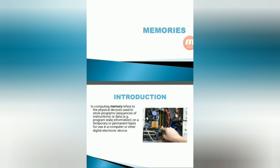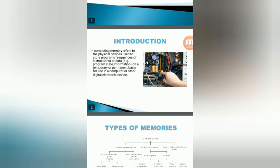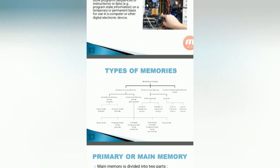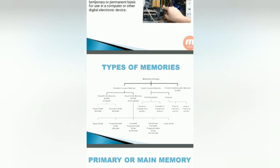Now we can go for classification of memories or types of memories. So memories are mainly classified in three different types: random access memory, serial access memory, and content addressable memory. These are the main memory types.